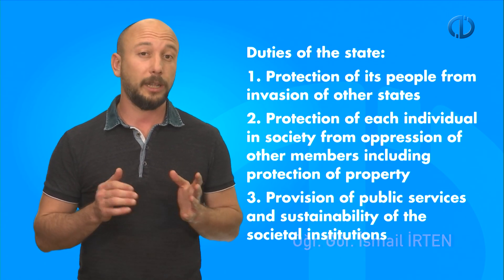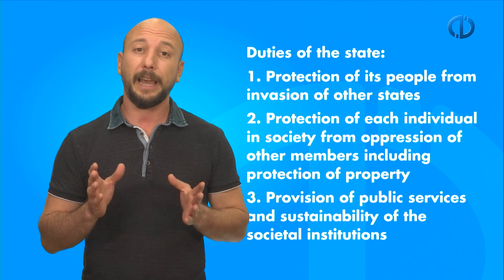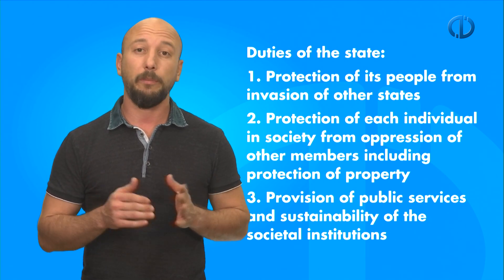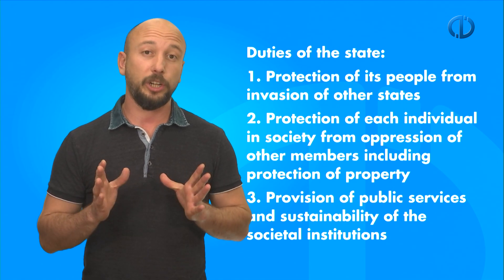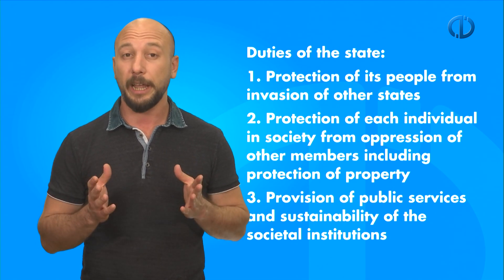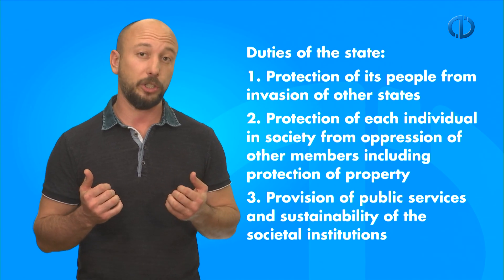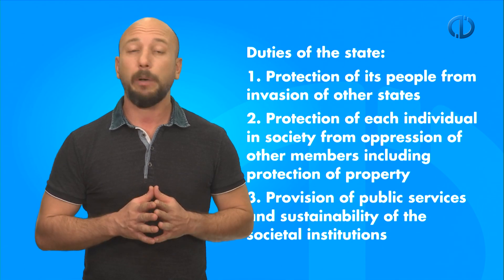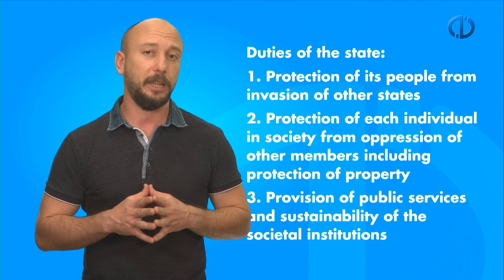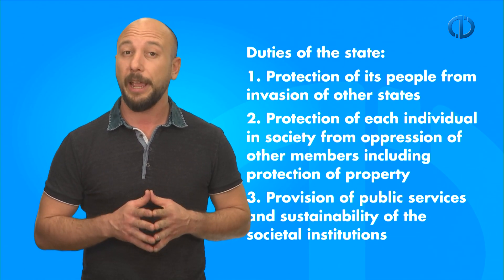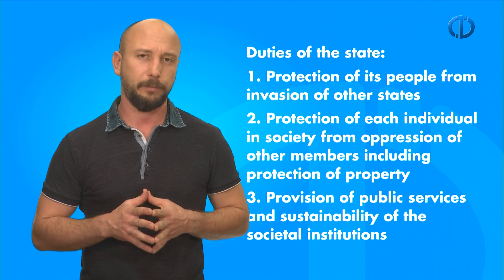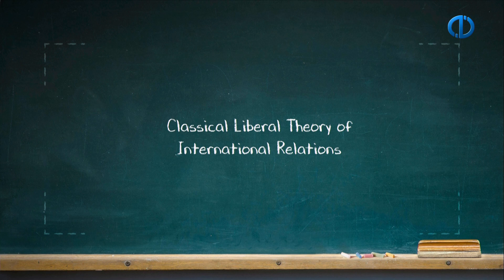According to Classical Liberals, the state has three duties. Protection of its people from invasion of other states. Protection of each individual in society from oppression of other members, including protection of property. And provision of public services and sustainability of the social institutions, important for both individual freedom and peaceful coexistence. Let's move on to classical liberal theory of international relations.